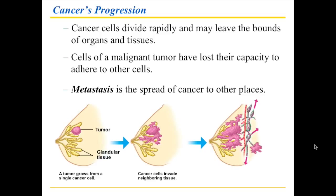Once cancer cells spread, they can invade neighboring tissues and literally grow around them — for example, around glandular cells or nerve cells. Finally, cancer cells can also spread through the lymph and blood vessels, through any aspect of the circulatory system, to other parts of the body. That is metastasis, and the cancer can then recur in another area of the body.